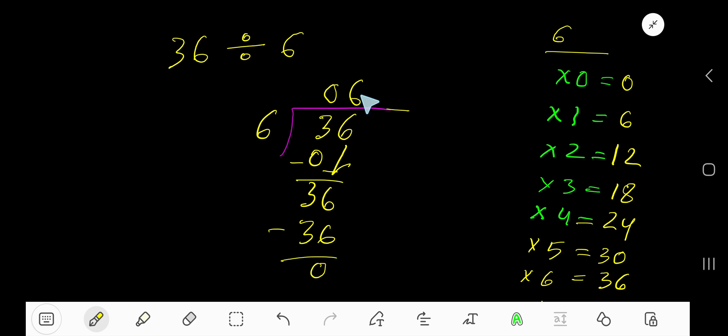0 6. Since this 0 is in the left hand side of this digit, this 0 doesn't have any value. So 6 is your answer, or quotient is 6.